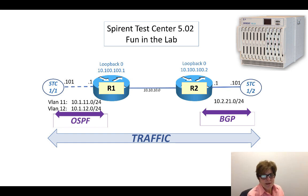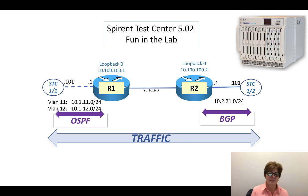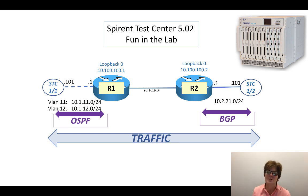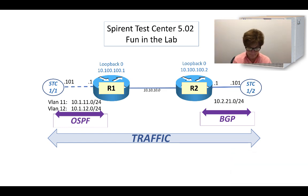Welcome to a little bit of lab rat fun networking with Phish. We're going to go ahead and complete that series - it's a three-part series. First we put the OSPF up between router 1 and the Spirent Test Center and advertised some prefixes, then we had BGP between router 2 and the Spirent Test Center. Now we're going to send traffic in between.